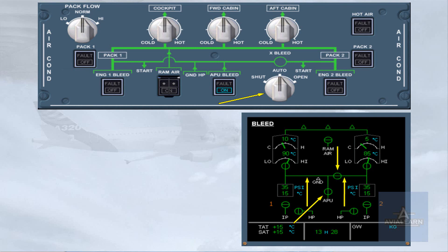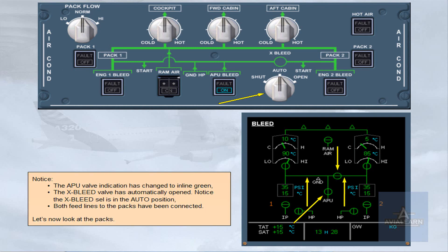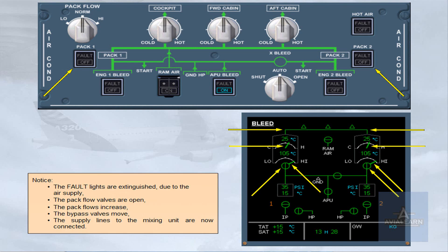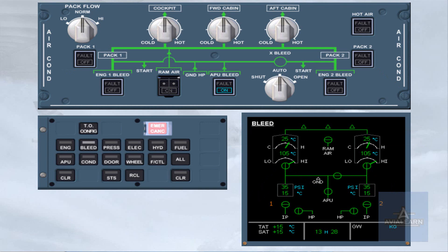Let's now look at the PACs. Notice the fault lights are extinguished due to the air supply. The PAC flow valves are open and the PAC flows increase. The bypass valves move, and the supply lines to the mixing unit are now connected. Both PACs are now providing air conditioning.